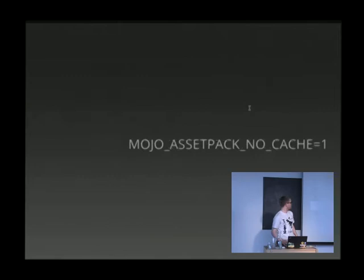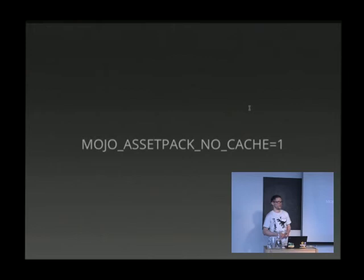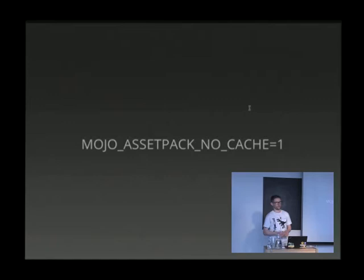There was another contribution where you can set the MOJO_ASSETPACK_NO_CACHE environment variable to a true value, and that will force Morbo or something like that to generate the files on each request. There are two ways of doing this: if you're changing the JavaScript files, you could use the -W switch for Morbo so it can watch your public directories as well, and when you save that file it will reload the program. But instead of telling Morbo which directories to watch, you can just set this environment variable and it will always generate a new file on each request.